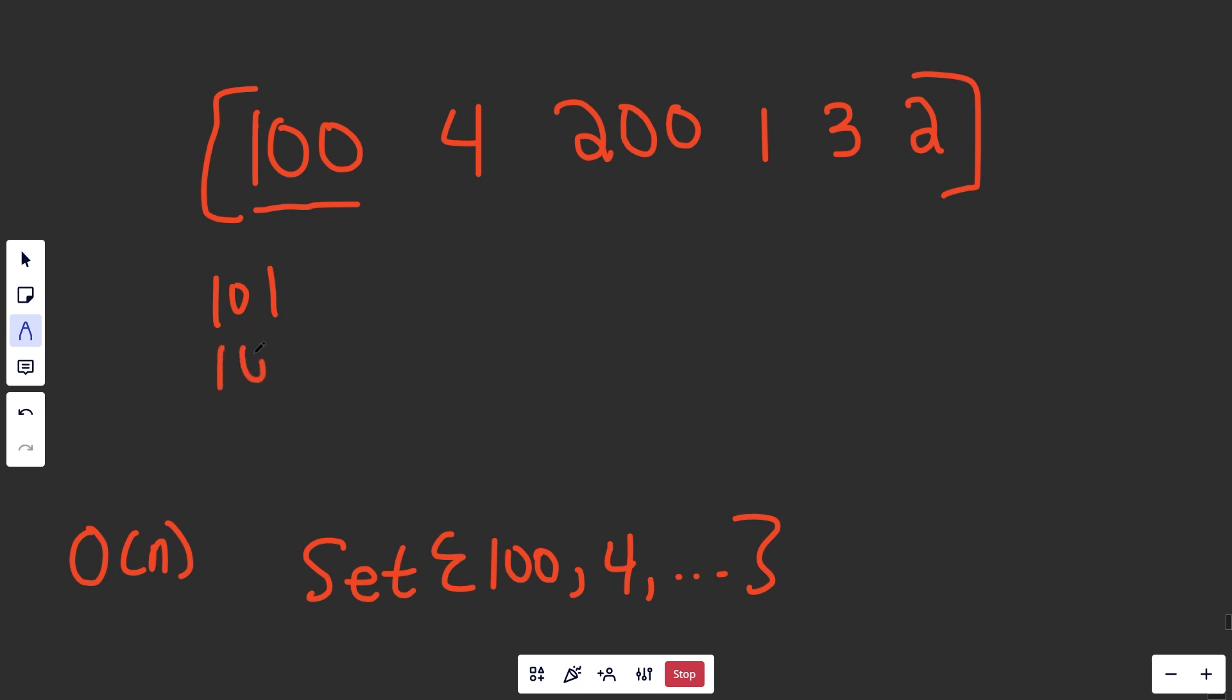And you could kind of keep checking that. You could say, if we have 101, do we have 102? Do we have 103? Or if you could go the other direction, we could do something like, we have 99 in the set. Do we have 98 in the set? Do we have 97? And you could keep doing that check.